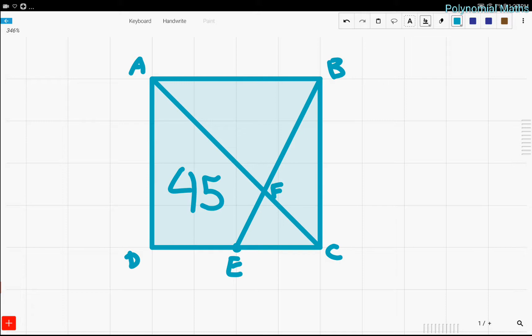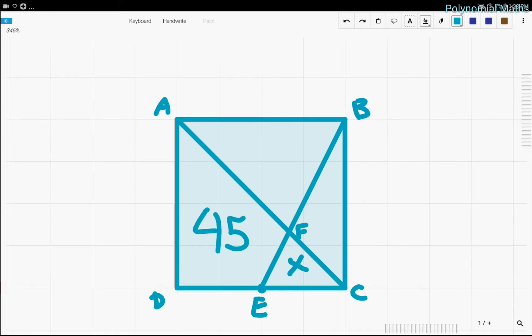So first we're going to start by assigning variables. Let's call this thing X. And we notice that triangle ABF is similar to triangle ECF. So using this information, we find that they're in a ratio of 2 to 1, and that means their area is in the ratio of 2 squared to 1 squared, which is equal to 4 to 1. So that means that ABF's area is 4X.